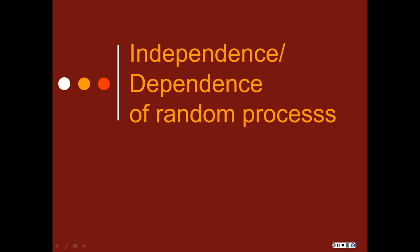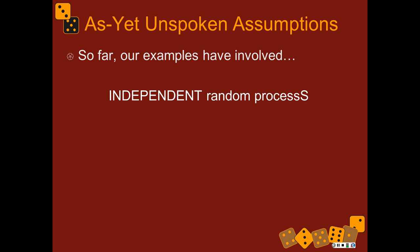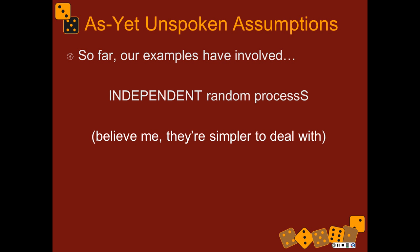Part three is talking about independence and dependence of random processes. Multiplication is where you really need to care about independence or dependence. So far we've been using some assumptions that have involved independent random processes. Independent random processes are easier to deal with, so we're going to focus an awful lot on independent random processes until we get to the end of the semester.